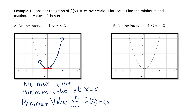Part b: on the interval between negative one and two, both ends included. Let's shade in the portion of the parabola that this domain encompasses. At negative one we now have a solid dot, and at two we have a solid dot with the corresponding y-value. The minimum value hasn't changed from the previous part — it occurs at the vertex. We have a minimum, and we can express it as the ordered pair (0, 0).